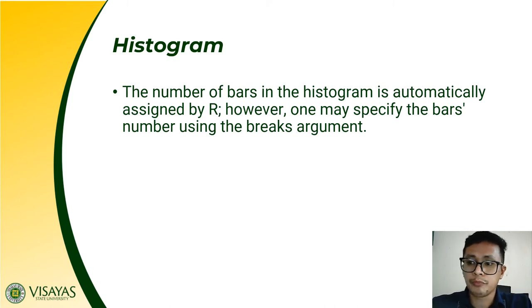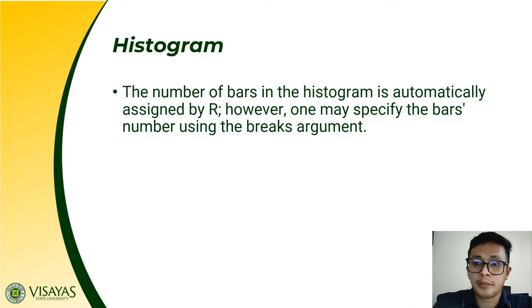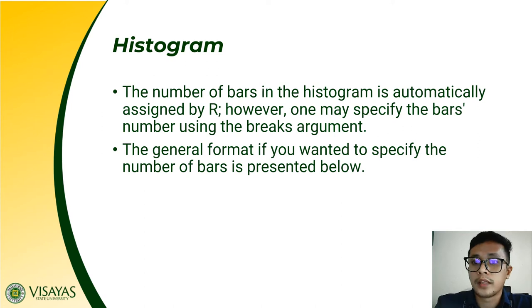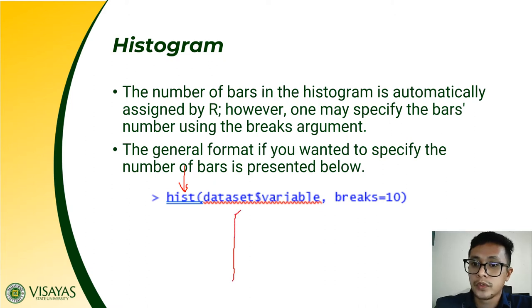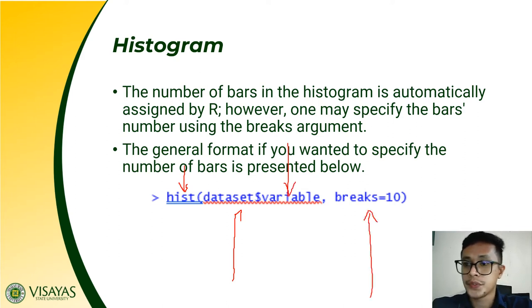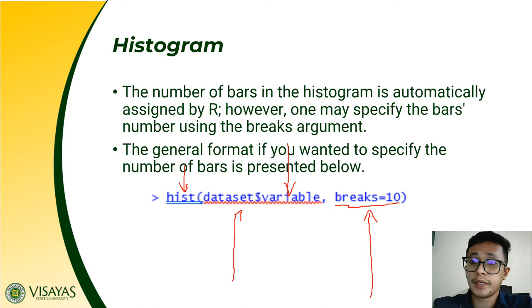The number of bars in the histogram is automatically assigned by R. However, you may specify the number of bars using the breaks argument. The general format is: use the hist function, specify the dataset and variable, then set breaks equal to the desired number — for example, breaks=10 means 10 bars will be displayed in our histogram.